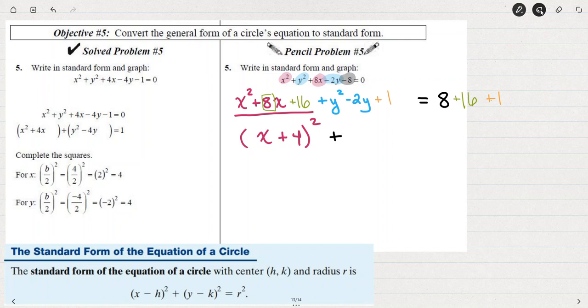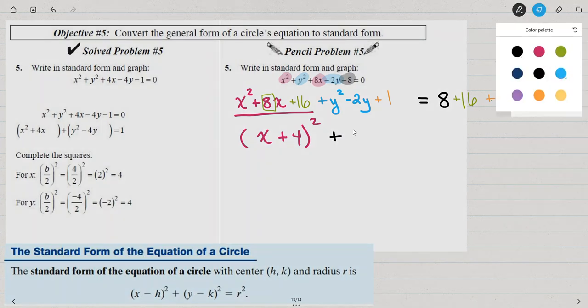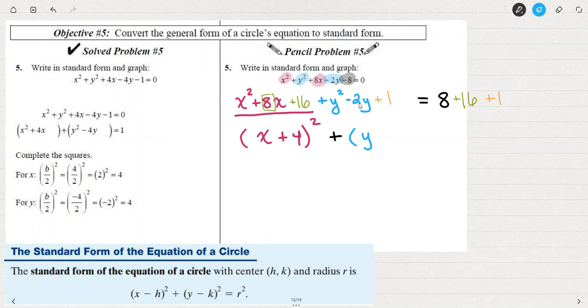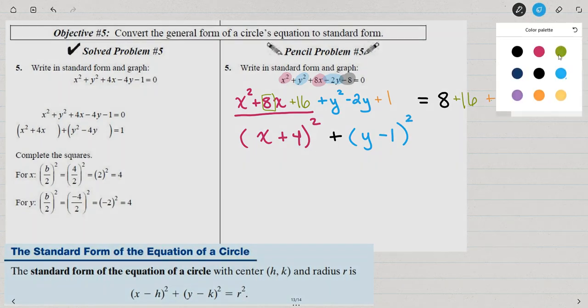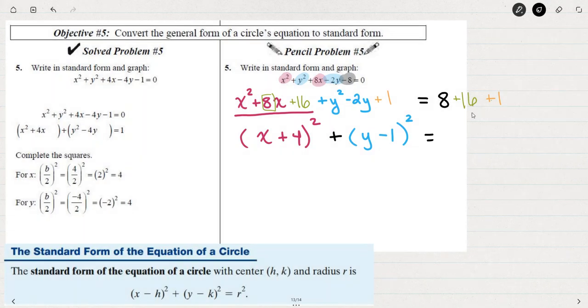Plus, I'm going to take the Y. Remember when we took that negative 2 and cut it in half? We had a negative 1. So Y minus 1 squared. And that's going to equal 8 plus 16 plus 7, so 25, which is 5 squared.